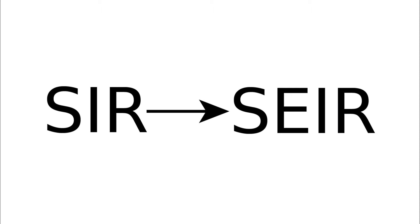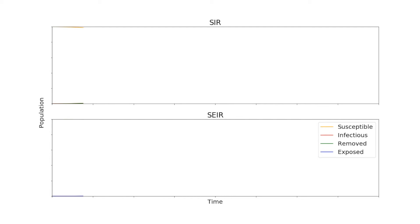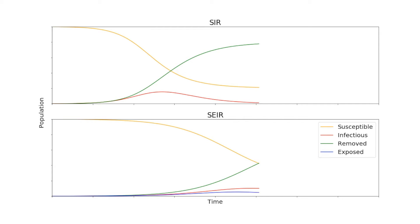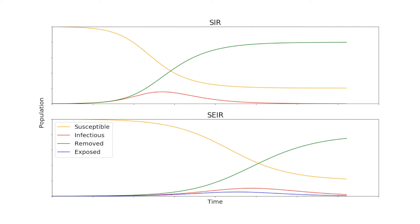The SIR model is good for many different diseases, but disease isn't always as simple as susceptible to infectious to removed. Many diseases involve a latent period, where an individual has contracted the disease but is not yet infectious and cannot transmit it to others. This latent period is a biological trait of the virus and depends on how the virus interacts in the body. The addition of the E, or exposed compartment, transforms the SIR model to the SEIR model, taking account for diseases with a latent period. The latent period causes the infectious peak to occur later than in the SIR model with no latent period.